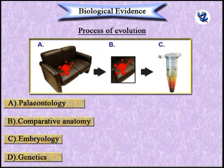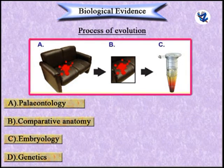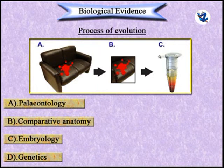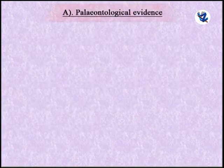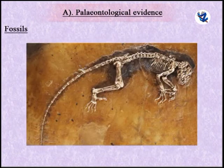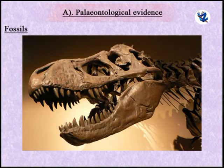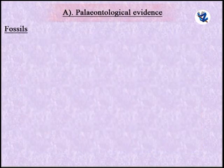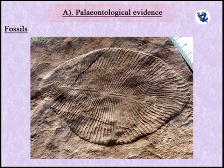Biological evidences: The present-day complex forms have evolved from simple forms of the past. This process is supported by evidences from paleontology, comparative anatomy, embryology and genetics. Paleontological evidences: Fossils are defined as the dead remains of plants and animals that lived in the past in various geological layers. Fossils are the true witnesses or documents of evolution. They are formed in sedimentary rocks, amber, volcanic ash, ice, peat bogs and soil.